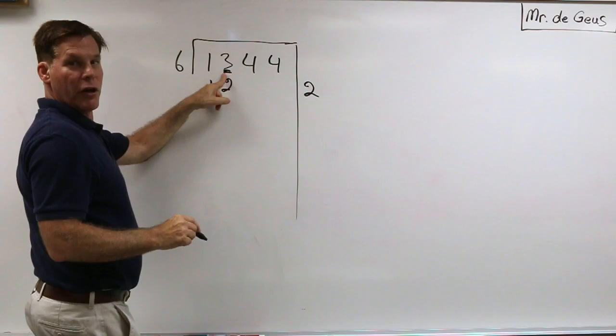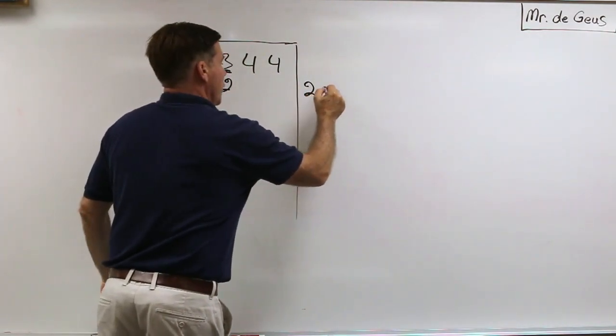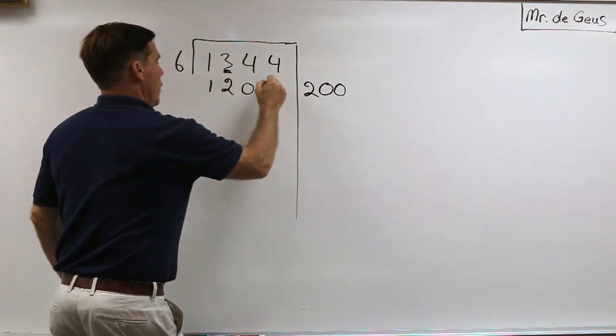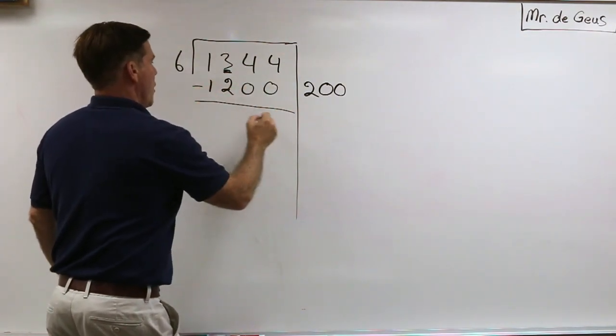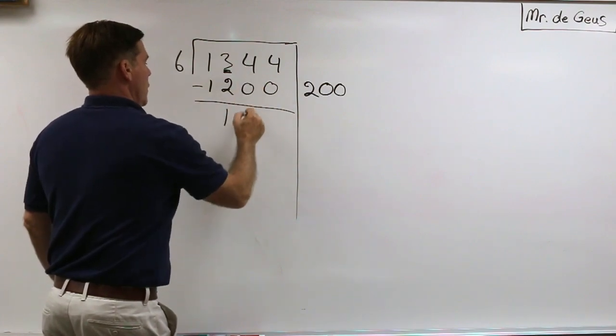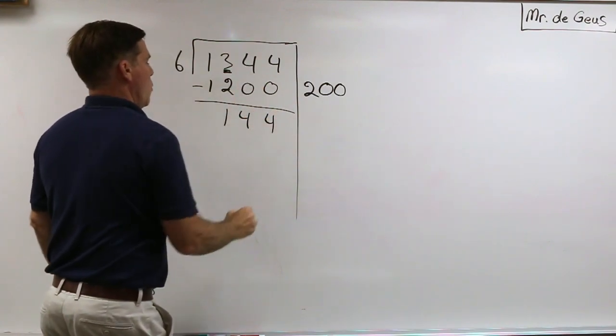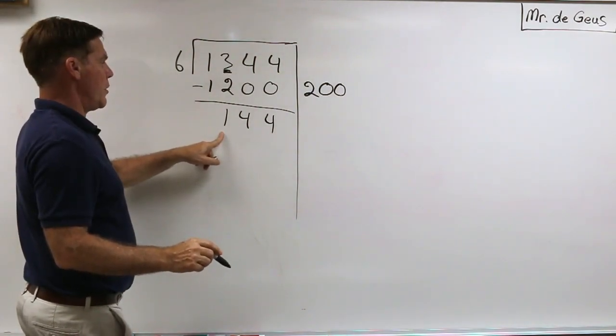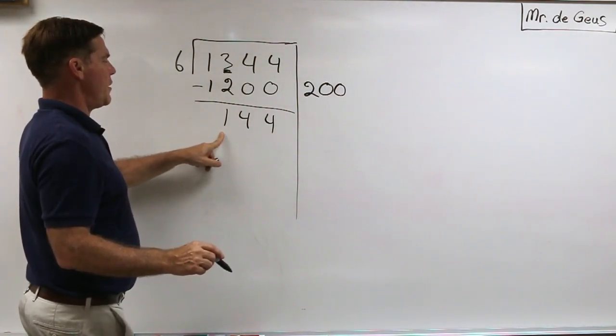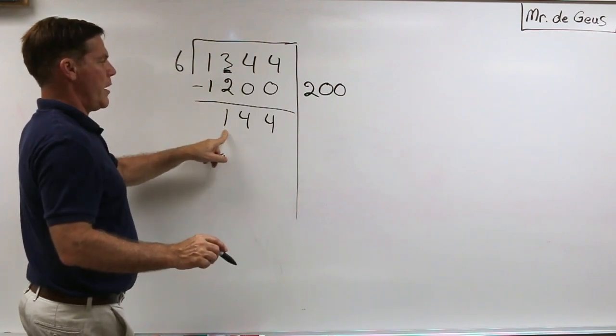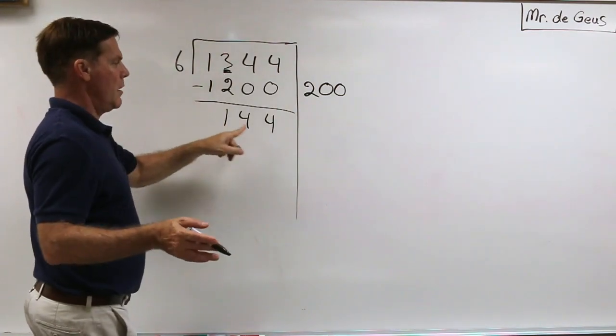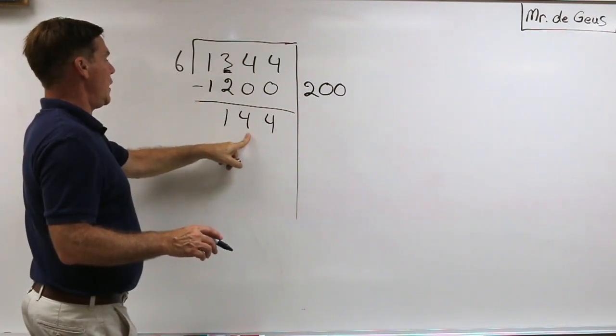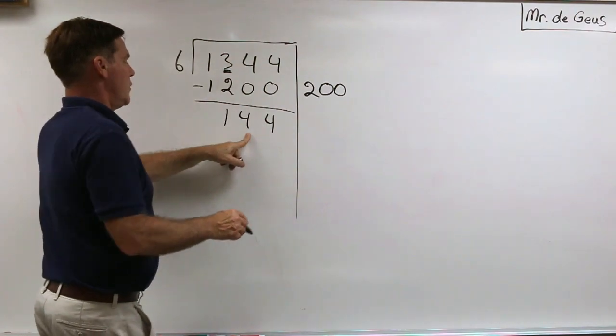But notice what's that place value, the hundreds place. So that's not really a 2, it's 200. So 6 times 200 equals 1200. I'm going to go ahead and subtract. That's a 1, that's a 4, that's a 4. Now I'm going to let the 6 go into 1, it doesn't go in there so that's okay. And even if I made a mistake and that a 6 could go into that, say it was a 7 or something, I could just put a 1 out there and continue.